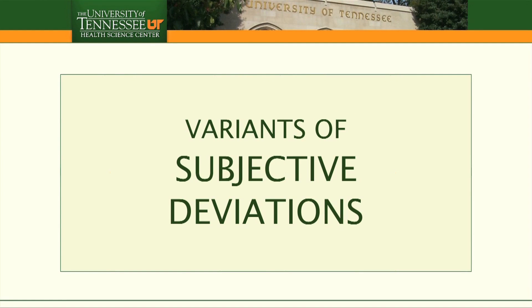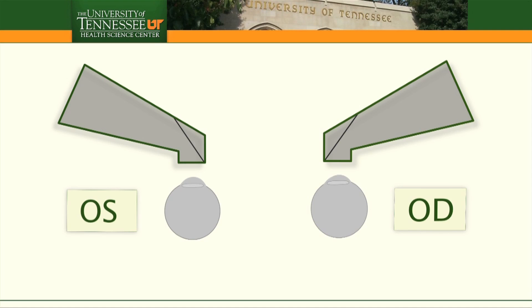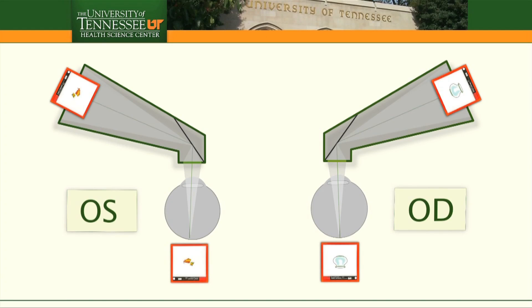Variations of subjective deviations: Abnormal retinal correspondence. On the troposcope, the assessment of retinal correspondence must be done without any fusional stimulus. Therefore, simultaneous perception slides are used.